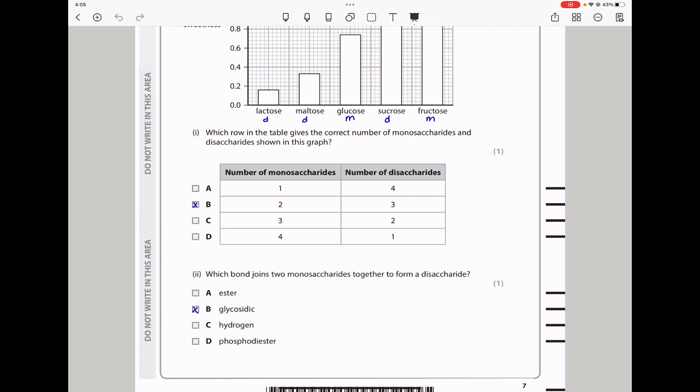Next they say which bond joins two monosaccharides together to form a disaccharide? That is a glycosidic bond. So the answer here should be B.